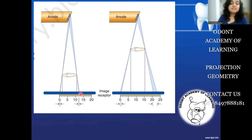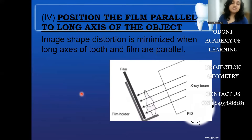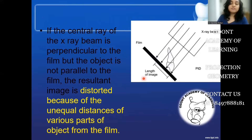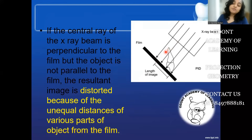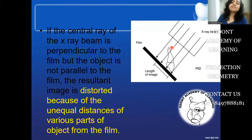That doesn't mean we place the x-ray film in direct contact with the tooth, which leads us to principle four: the long axis of the film should always be parallel to the long axis of the tooth. Without this, x-ray photons hitting the root — where the film is not in close contact — must travel a farther distance, causing divergence and distortion. The image will appear either more elongated or more foreshortened than its actual size.